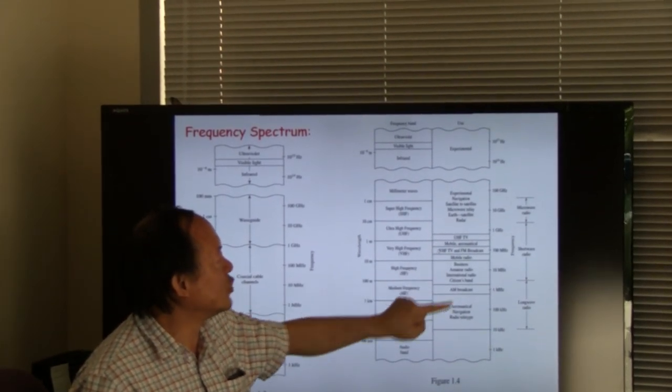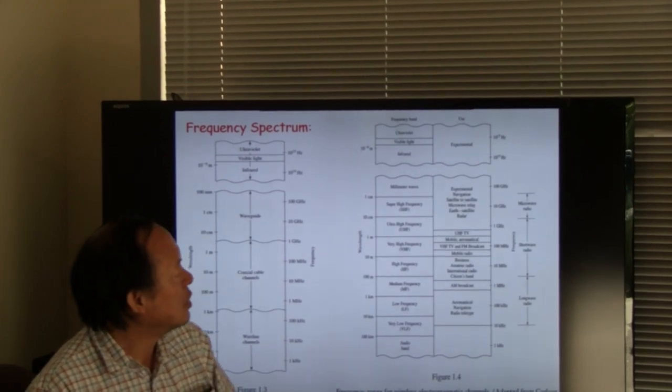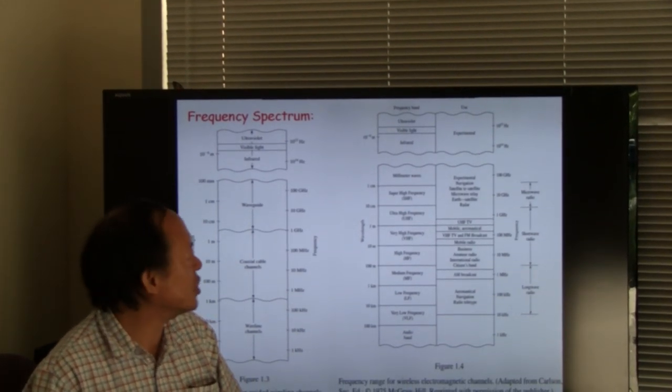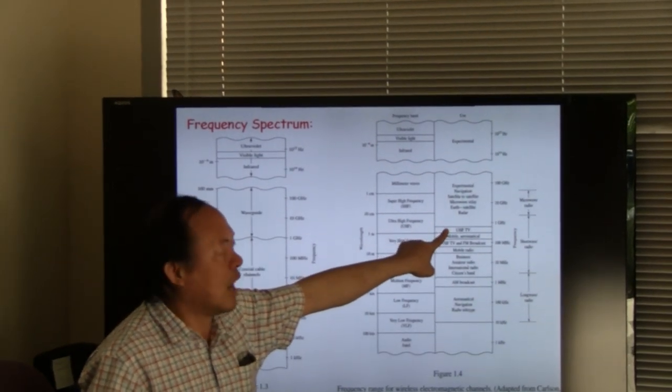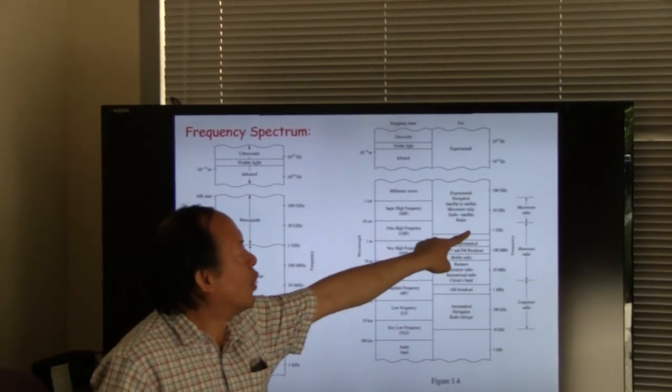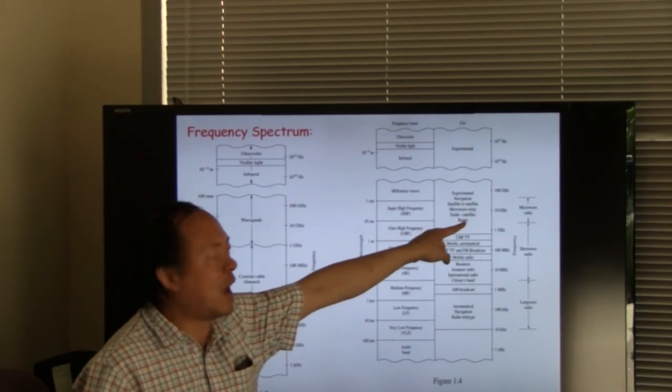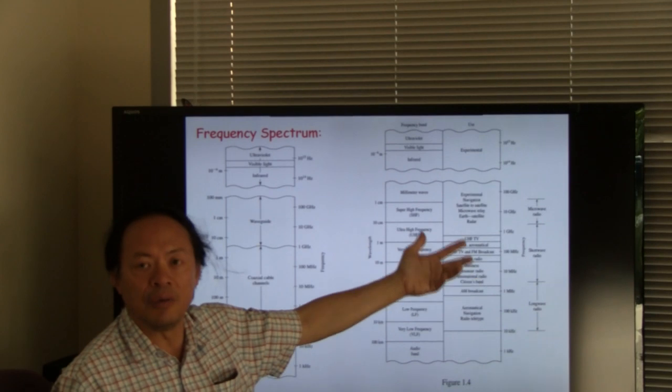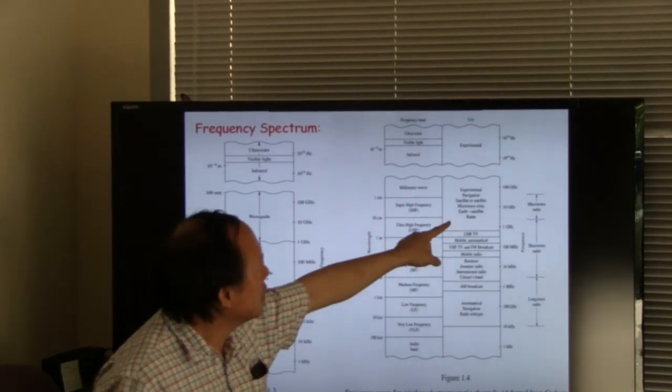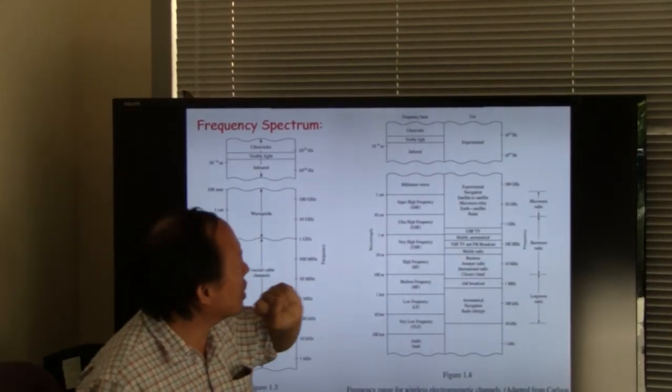About 100 megahertz is where most of your TV signals and FM broadcasting are performed. Above that you have UHF TV, and then from one gigahertz to about five gigahertz you have various 1G, 2G, and 3G systems, mostly centered around two gigahertz.